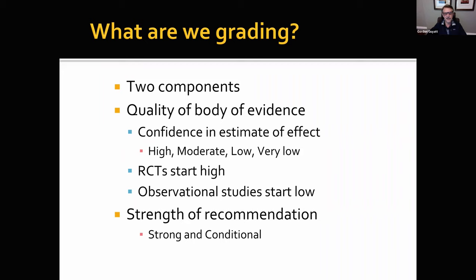Randomized trials start as high quality evidence, but there are many reasons for rating down quality from randomized trials. Observational studies start as low quality evidence, but on occasion — not very often, but on occasion — we can rate up the quality of evidence from observational studies to moderate or high.